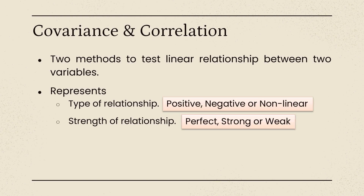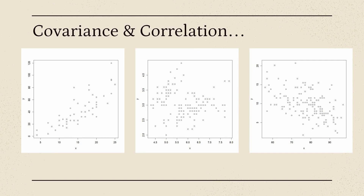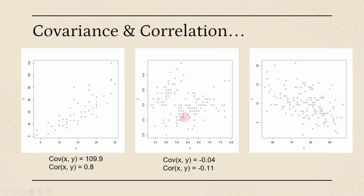Now I am going to explain these two things with the help of examples. Here I am presenting three scatter plots. The first scatter plot has covariance 109.9 and correlation 0.8. That means there exists some positive relationship between these two variables x and y, that's why we got positive values here. In the second scatter plot, we cannot guess any linear relationship between x and y, that's why we got covariance as well as correlation nearer to 0.